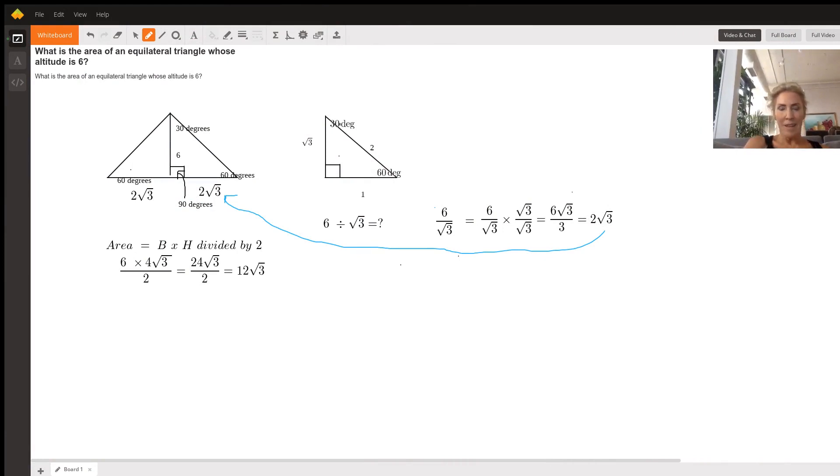Hey everybody, so we're trying to answer the problem: what is the area of an equilateral triangle whose altitude is six? So here's the picture of our equilateral triangle. Remember, an equilateral triangle has three 60 degree angles.